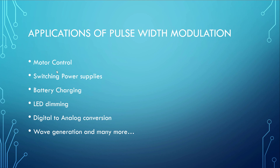Common PWM applications include motor control — servos, BLDC, and stepper motors — switching power supplies, battery charging, and LED dimming. PWM can also be used for digital-to-analog conversion, since the PWM average value approximates an analog level similar to AC behavior. Additionally, PWM can be used for wave generation to produce different output waveform shapes.